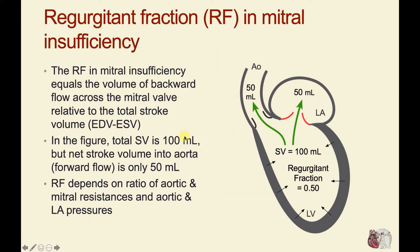When we have regurgitation back through the mitral valve, we divide the stroke volume between what goes into the aorta and what goes back into the left atrium. We can calculate a regurgitant fraction, much as we did for aortic valve regurgitation. If the stroke volume — EDV minus ESV — is 100 mLs, and forward stroke volume into the aorta is 50 mLs while regurgitant flow into the left atrium is also 50 mLs, then the regurgitant fraction would be 0.5 or 50%.